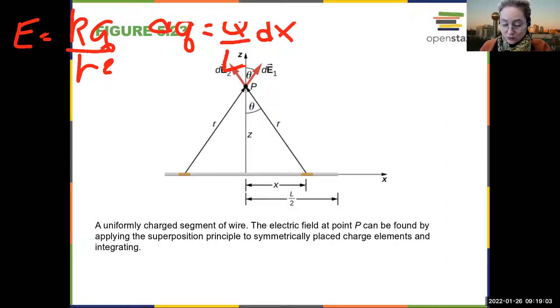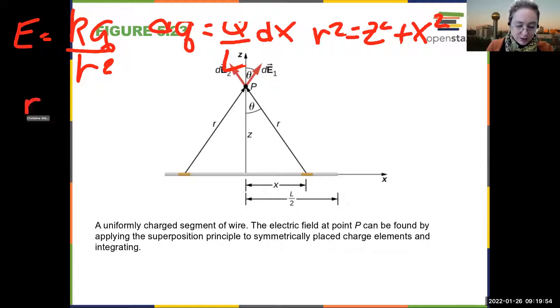Okay, now we need to write the length, and I'm going to stick with the convention in the figure. So the length squared is going to be z squared plus x squared.